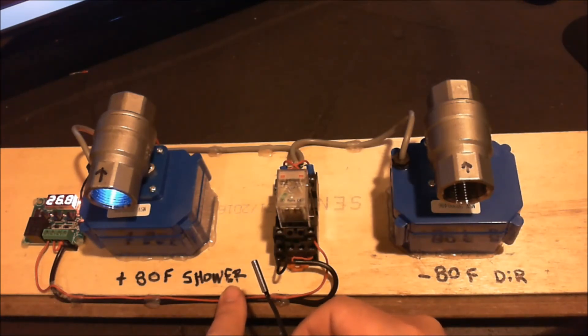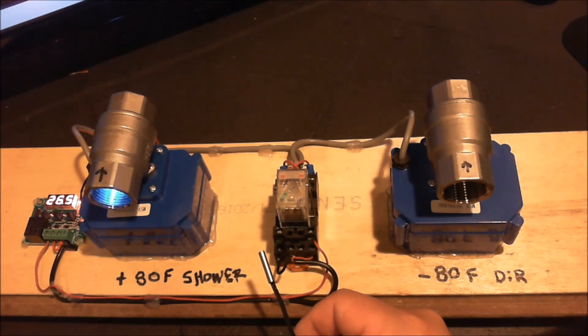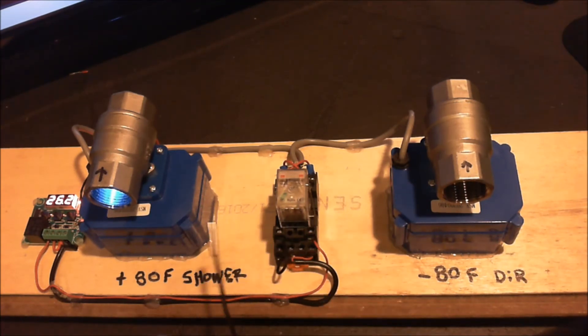Alright, now you see my fingers off the thermistor, and that temperature is now decreasing back down below 80 degrees. Okay, so that's simulating that the water temperature of the pool is going below 80 degrees. And then when it does go below 80 degrees,